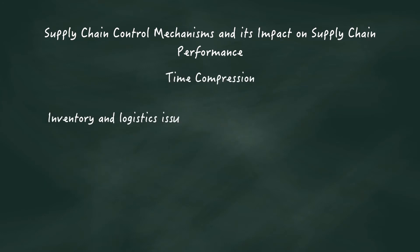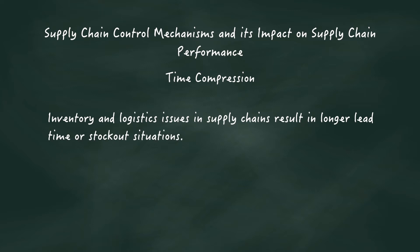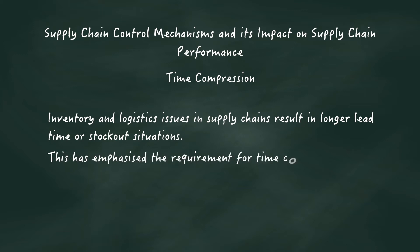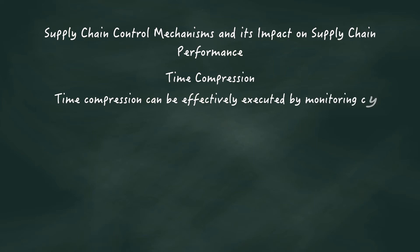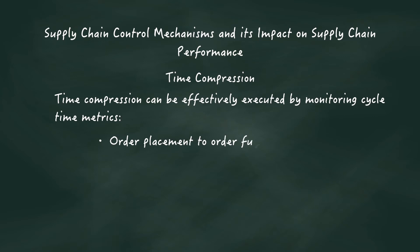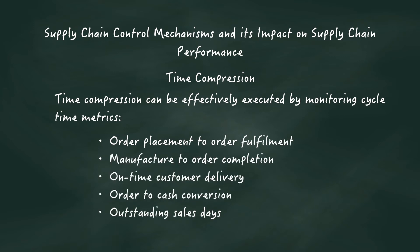Time compression: inventory and logistics issues in supply chains result in longer lead time and stock-out situations, emphasizing the requirement for time compression. Time compression can be effectively executed by monitoring cycle time metrics, namely: order placement to order fulfillment, manufacture to order completion, on-time customer delivery, order to cash conversion, and outstanding sales days.